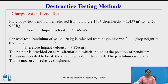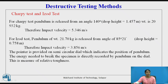For the IZOT test, the weight of the pendulum is 21.70 kg and it is released from 85 degrees, with a drop height of 0.758 meters. The impact velocity for the IZOT test is 3.856 meters per second. A pointer on the semicircular dial indicates the position of the pendulum.